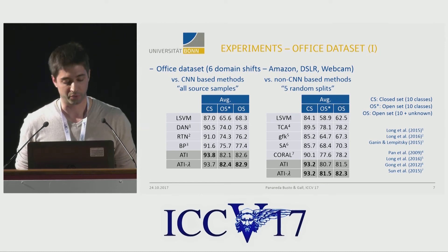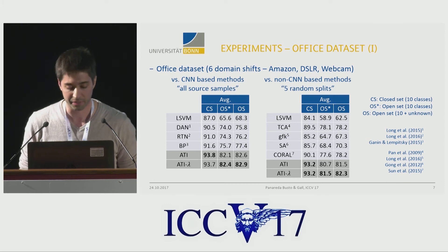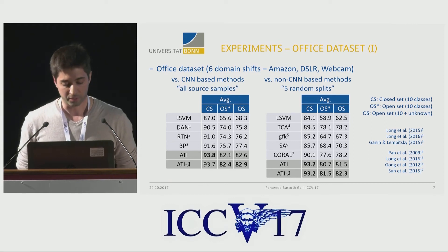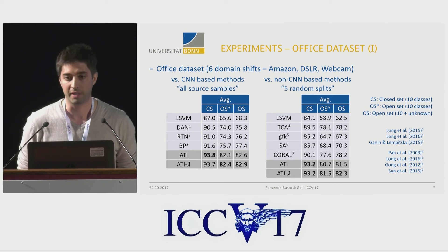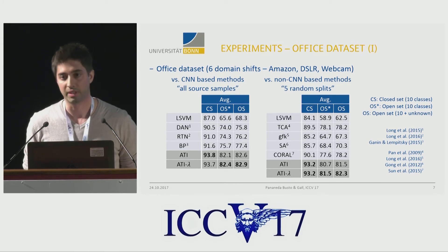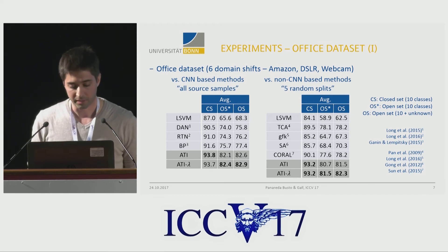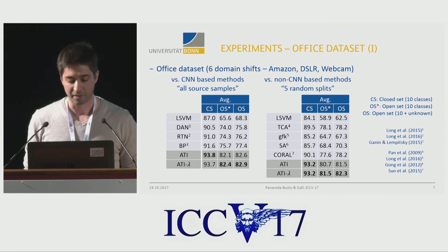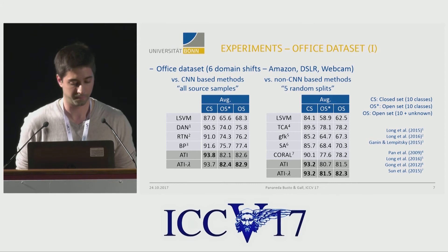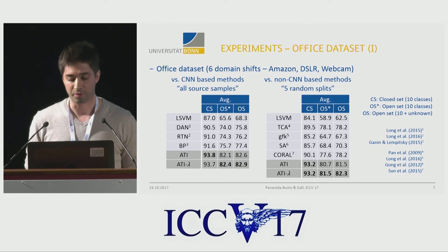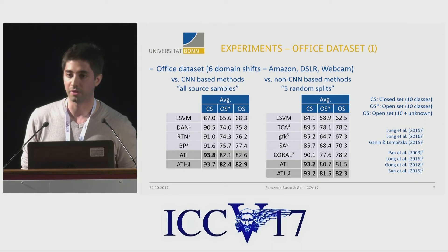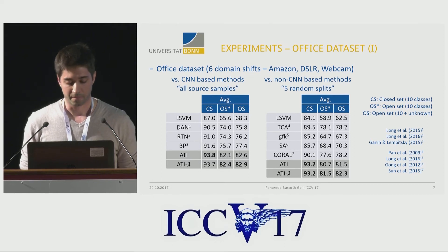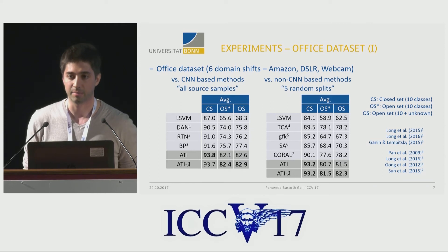Now I'd like to show some results of our method on the Office dataset, which has six domain shifts, and we report the average of all of them. We show two variants of our method: the first, ATI, has no outlier rejection, so the assignment is done to all target samples; the second variant includes lambda with the outliers. We compare against CNN and non-CNN-based methods across three configurations. The first column uses the 10 shared classes with a standard closed-set protocol. The second column uses our new open-set protocol but computes accuracy only on shared classes. The third column uses the open-set protocol and includes the unknown class in the accuracy computation.